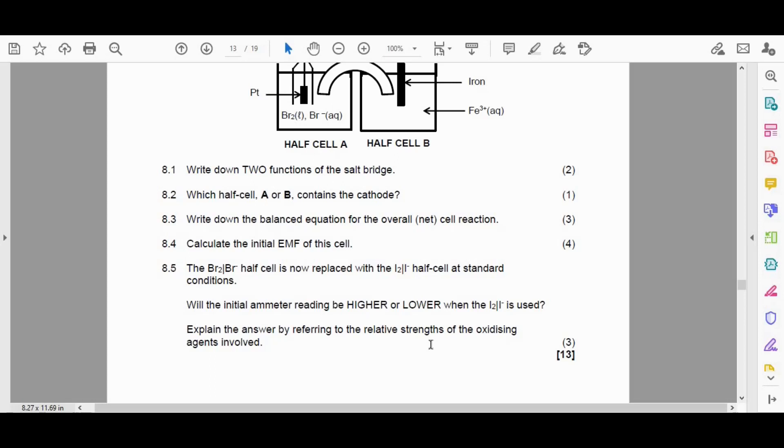All right. So we have amateur reading. Will the initial amateur reading be higher or lower when the I2 half cell is used? Explain the answer by referring to the relative strengths of oxidizing agents that are involved.